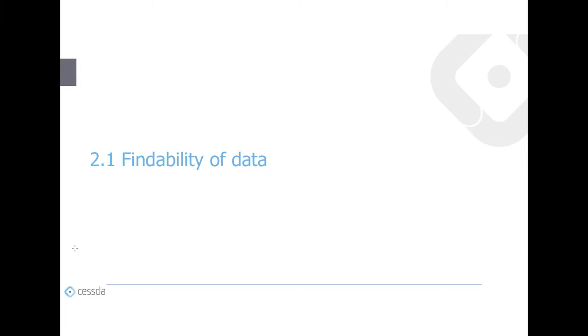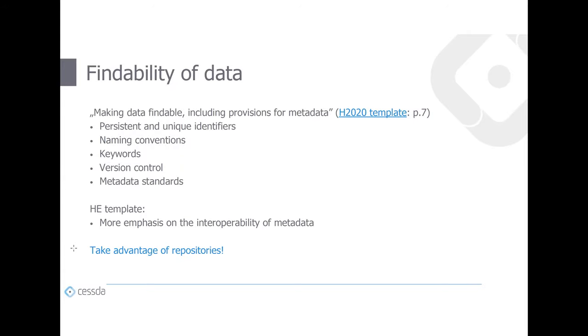Let's come to the FAIR criteria, which form the main chapter of the DMP template provided by Horizon Europe. Findability of data is the first FAIR criterion. The Horizon 2020 template states 'making data findable, including provisions for metadata' as a guideline for this chapter. We will talk about several aspects of findability, including persistent and unique identifiers, naming conventions, keywords, version control, and metadata standards.